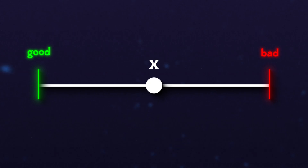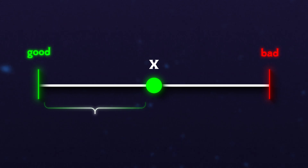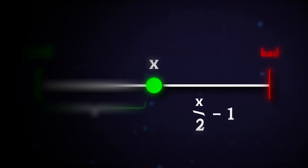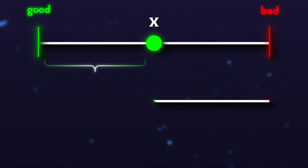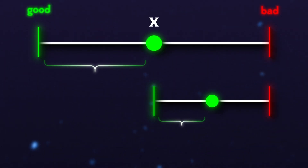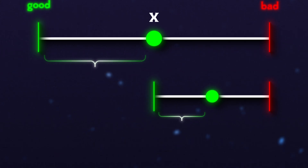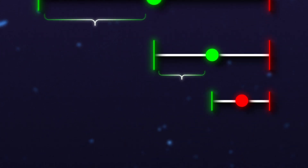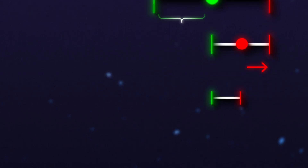If we test the middle commit and find it is good, we know that all commits before it are good — we've cut our search space in half, leaving X divided by 2 minus 1 commits to check. If we repeat the process, we find smaller and smaller regions. If a middle commit turns out to be bad, we know all commits in that direction are bad, and we repeat until we find the singular commit that introduced the bug.